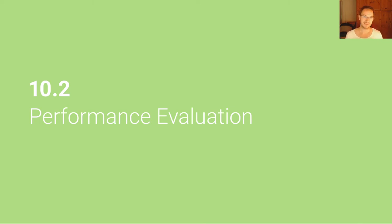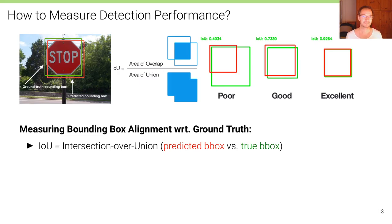How can we evaluate object detection performance? Let's first consider the case of a single object in the scene, such as this stop sign here.